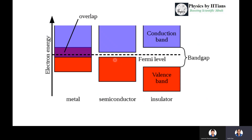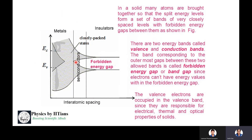For a semiconductor you must provide some external electric field, and for an insulator you must provide much more energy so that electrons jump from the valence band to the conduction band to produce current. In a solid, many atoms are brought together so that split energy levels form a set of very closely spaced levels — the valence band and conduction band — with a forbidden energy gap between them. Electrons cannot have any energy value within this forbidden gap. Valence electrons occupy the valence band and are responsible for the electrical, thermal, and optical properties of the solid.